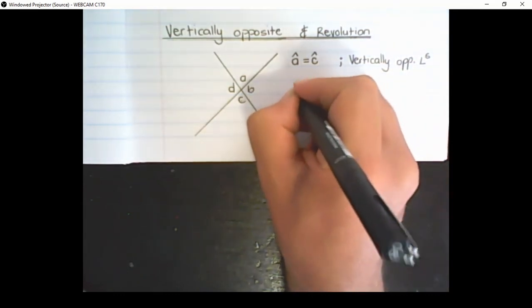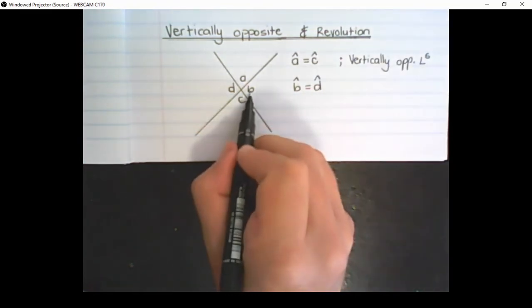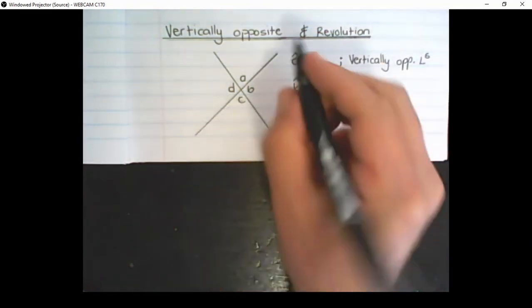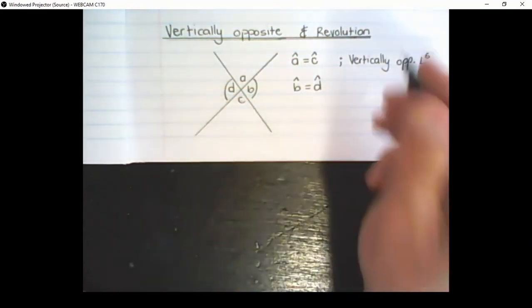I can also say that angle B is equal to angle D. So B is equal to angle D, because they are vertically opposite each other.